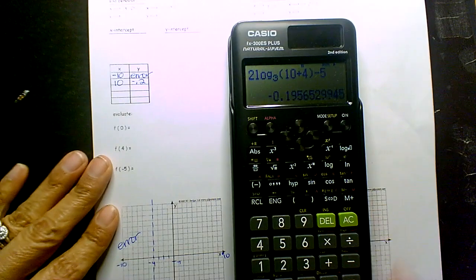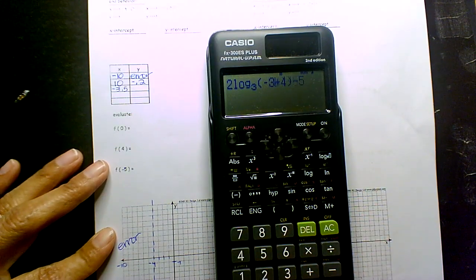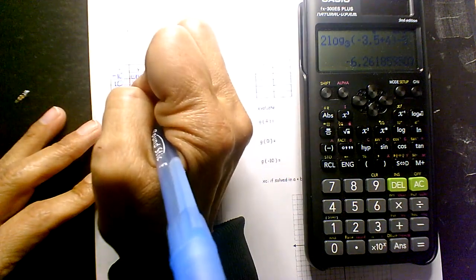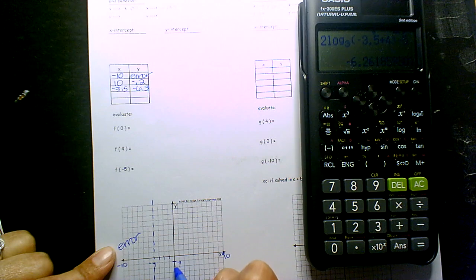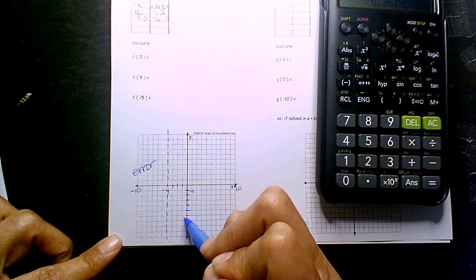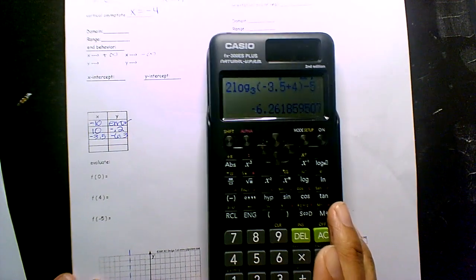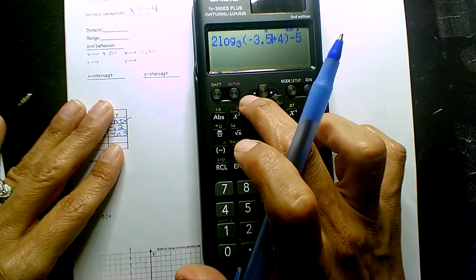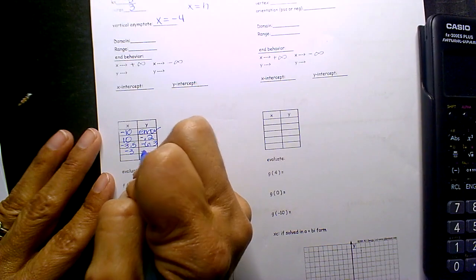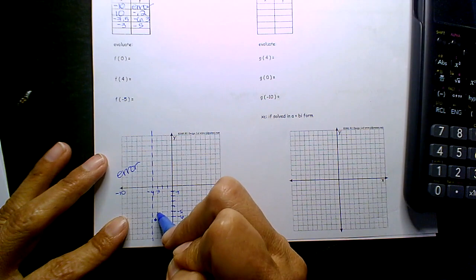So if you're at negative 4, I'll pick negative 3.5. If I substitute negative 3.5, I get negative 6.3. So negative 3.5 would be 1, 2, 3, 4, 5, 6 — negative 6.3 would be right there. Let's plug in negative 3, and I get negative 5. So negative 3 is negative 5.